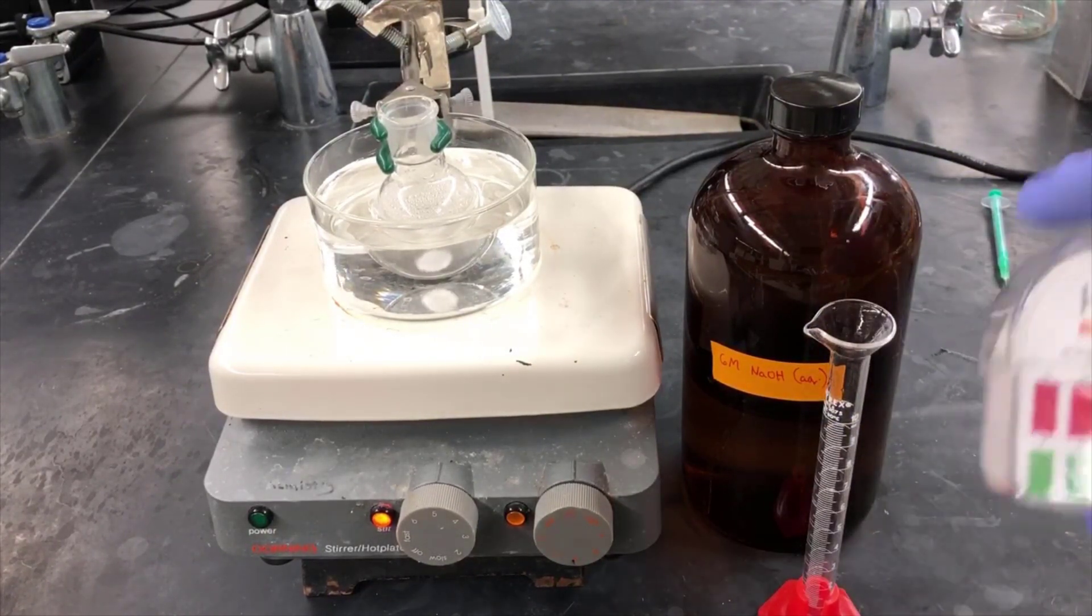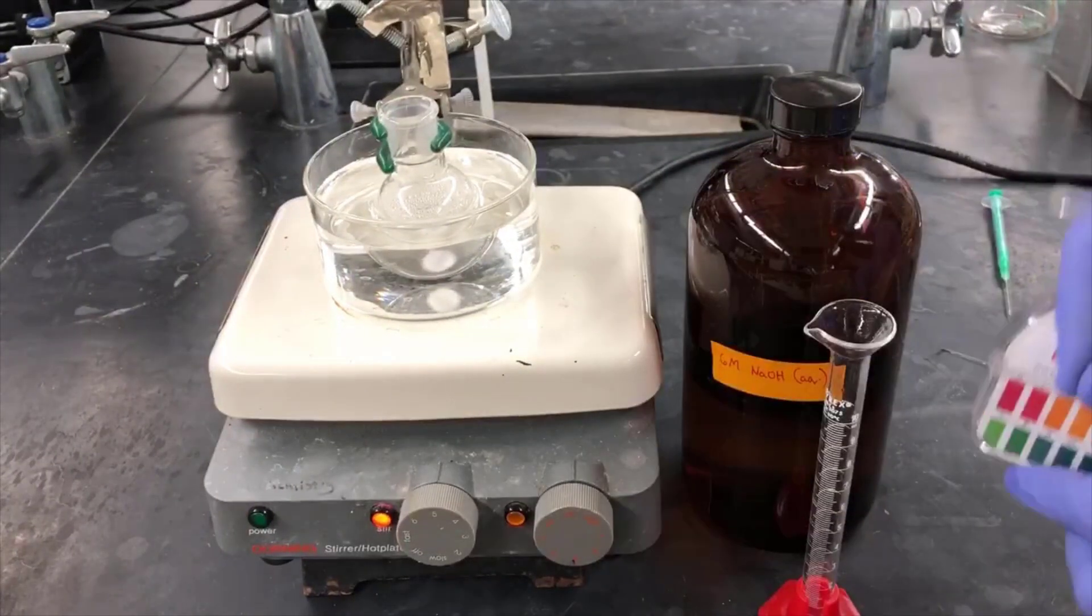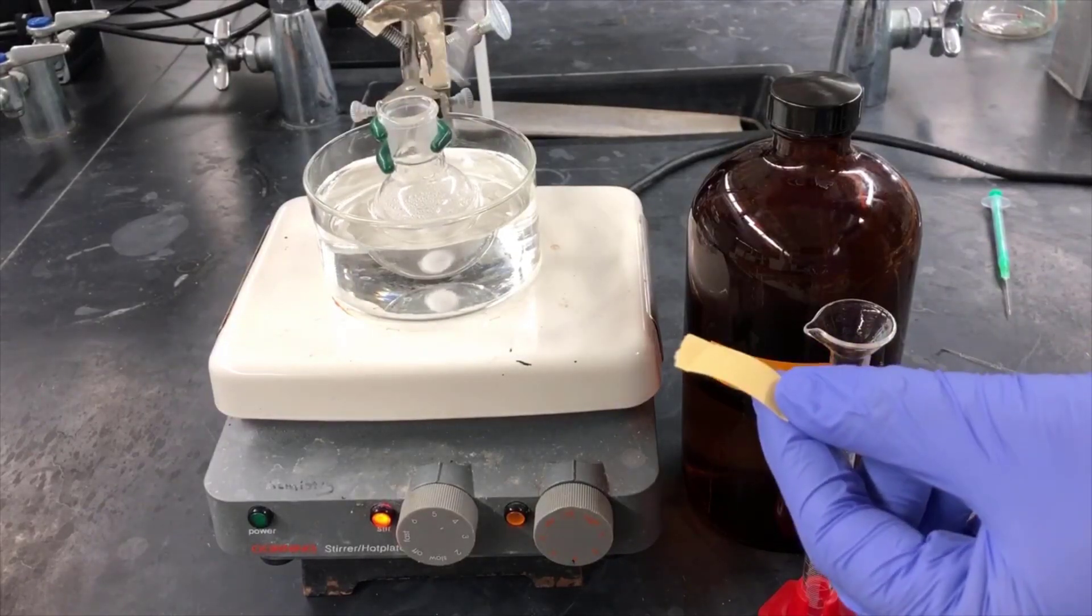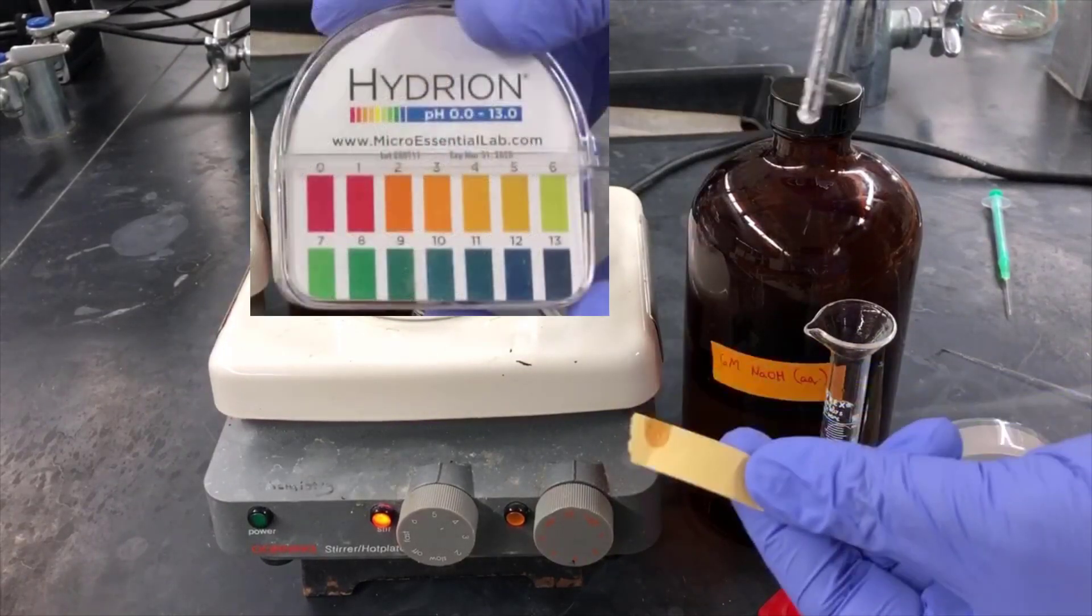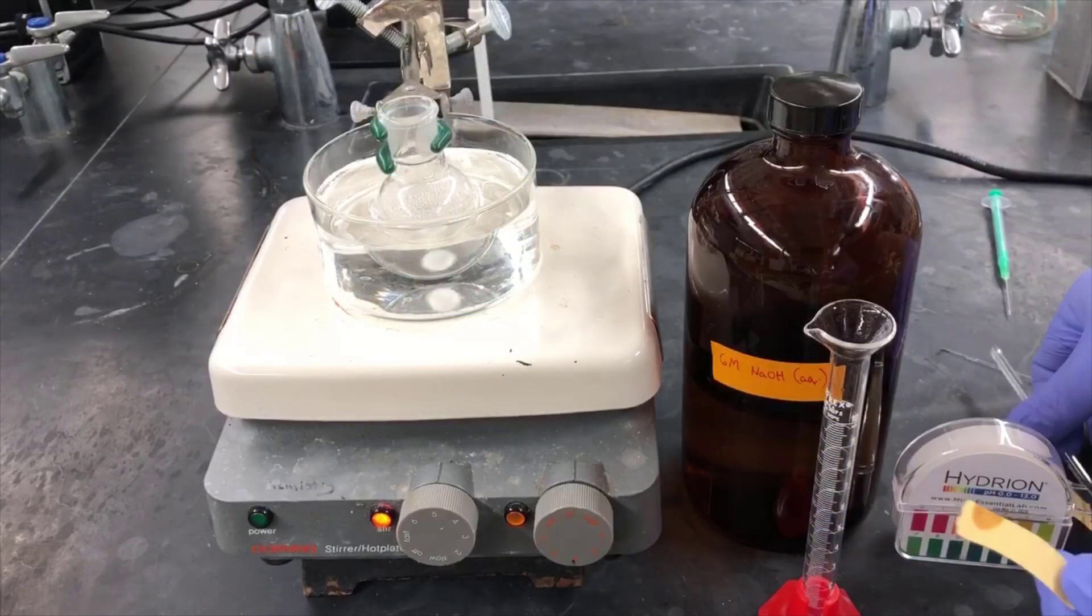We'll use pH paper to test the pH of the solution. We want the solution to be basic so that we can be sure all the acetic acid has been deprotonated. I'm dipping a glass stir rod in the solution and touching it to the paper. The orange color indicates a pH of about 4, which is still acidic. We're going to have to add some more sodium hydroxide and test again.